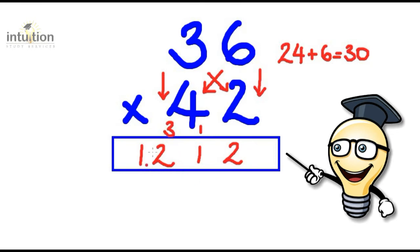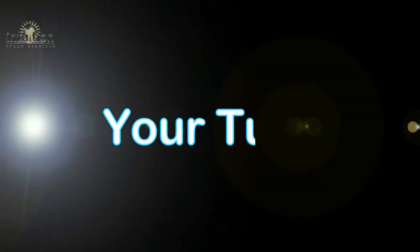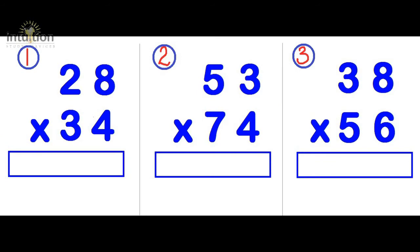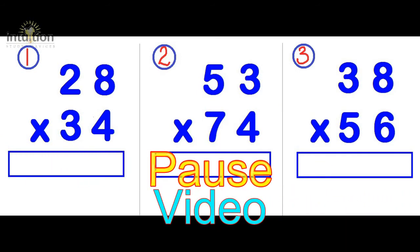So that 3 now gets added to the 12 from before. So that makes 1512. Okay. So hopefully by now you would have got a good handle on the technique. So what I'll do is I'll leave you with these 3 questions for you to try. You can pause the video and I'll join you in a few moments.